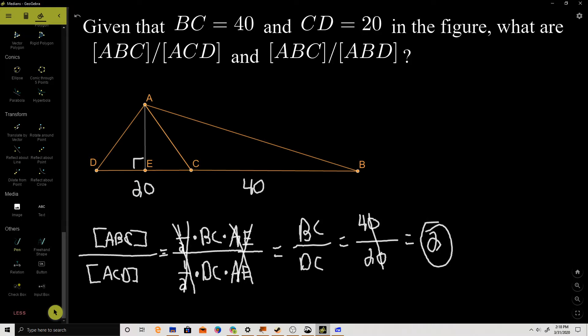And then we have 4 over 2, which is just 2. Even though we don't know what the areas are numerically, and we don't even know what the height is numerically, we can still find out the ratio of the areas fairly easily. The ratio of the area of ABC to ACD is 2, meaning ABC has twice the area of ACD.